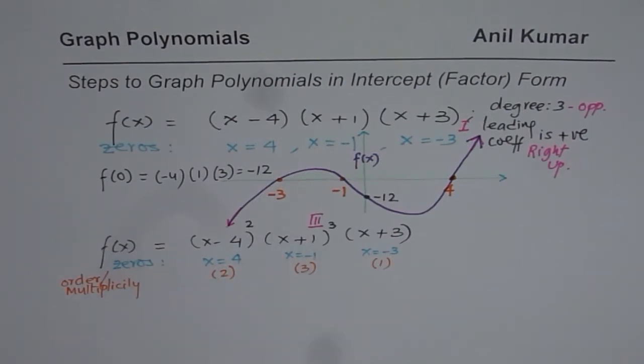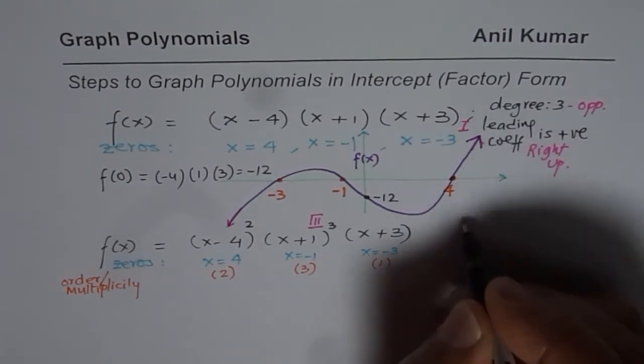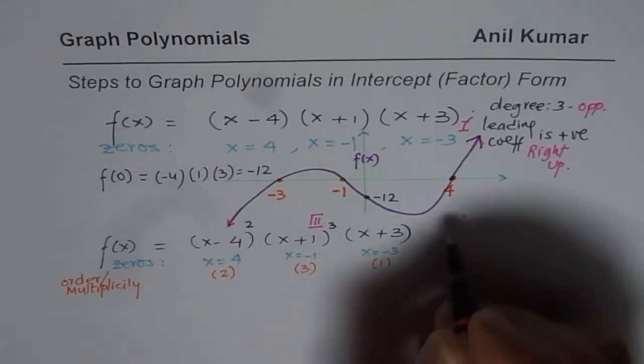So that becomes the multiplicity of zero. Now how will the graph change? That is what we have to think about. What you note here is that if the order is not linear, it is kind of a quadratic. Then at the x intercept, the graph will turn. So what we note here is a couple of things. Let us make note of those things first.